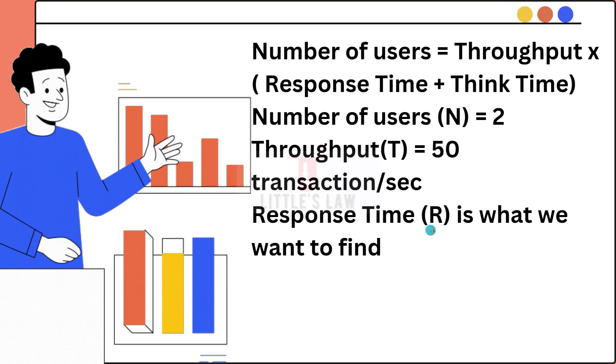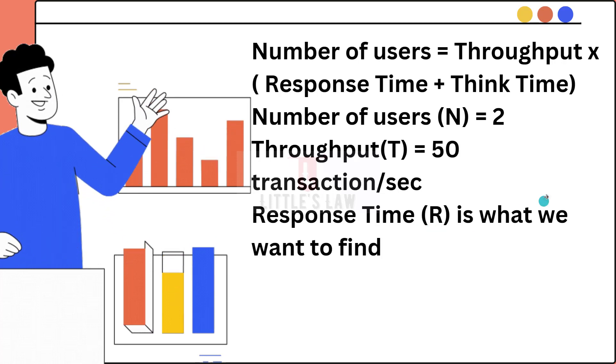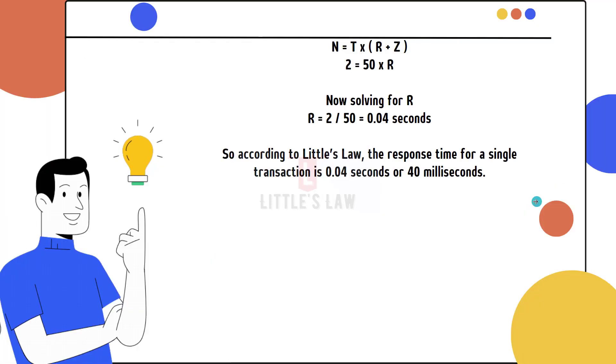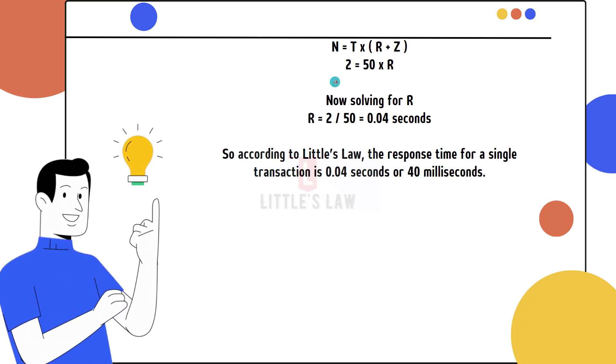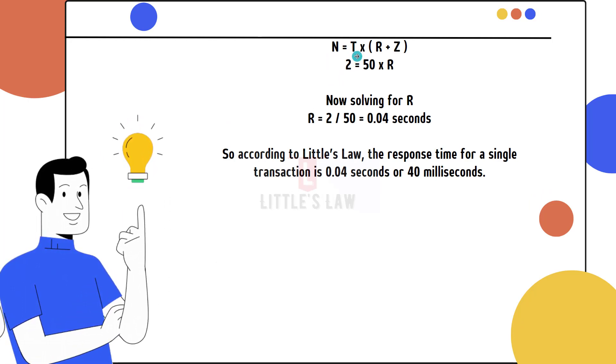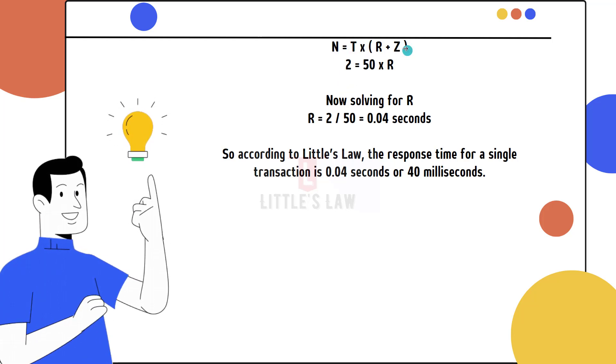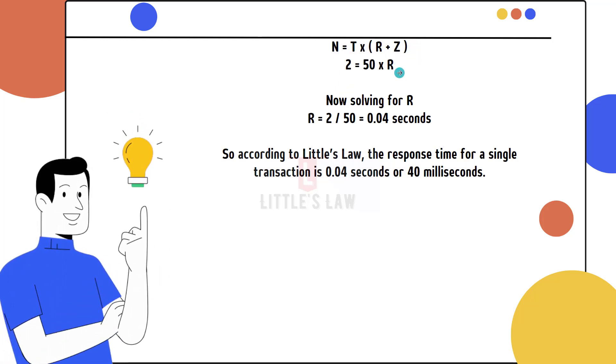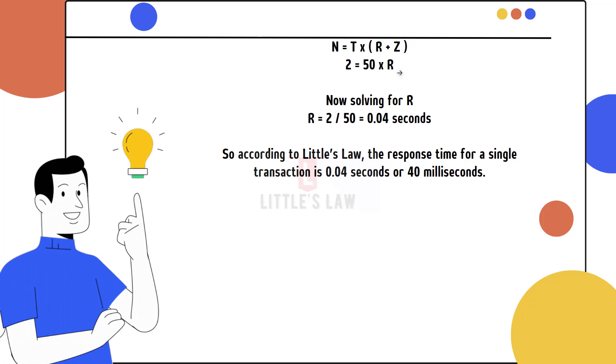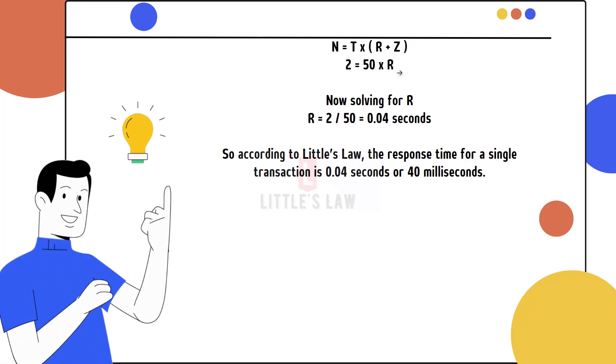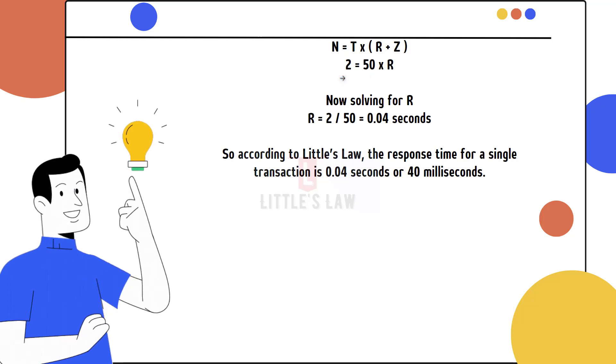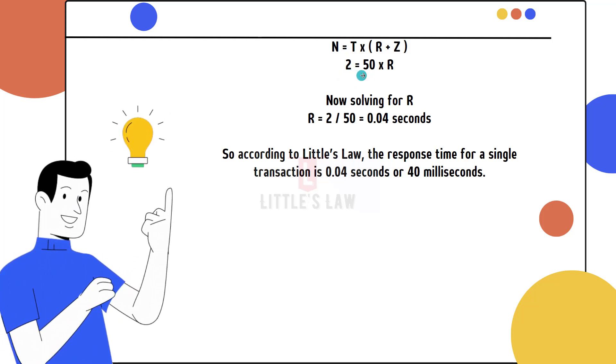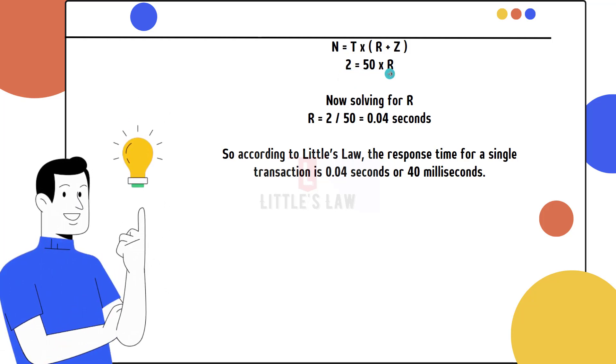The response time is what we want to find. The formula is N = T × (R + Z), where N is number of users, T is throughput, R is response time, and Z is think time. In this scenario we do not have any think time, so we just have to find the response time.